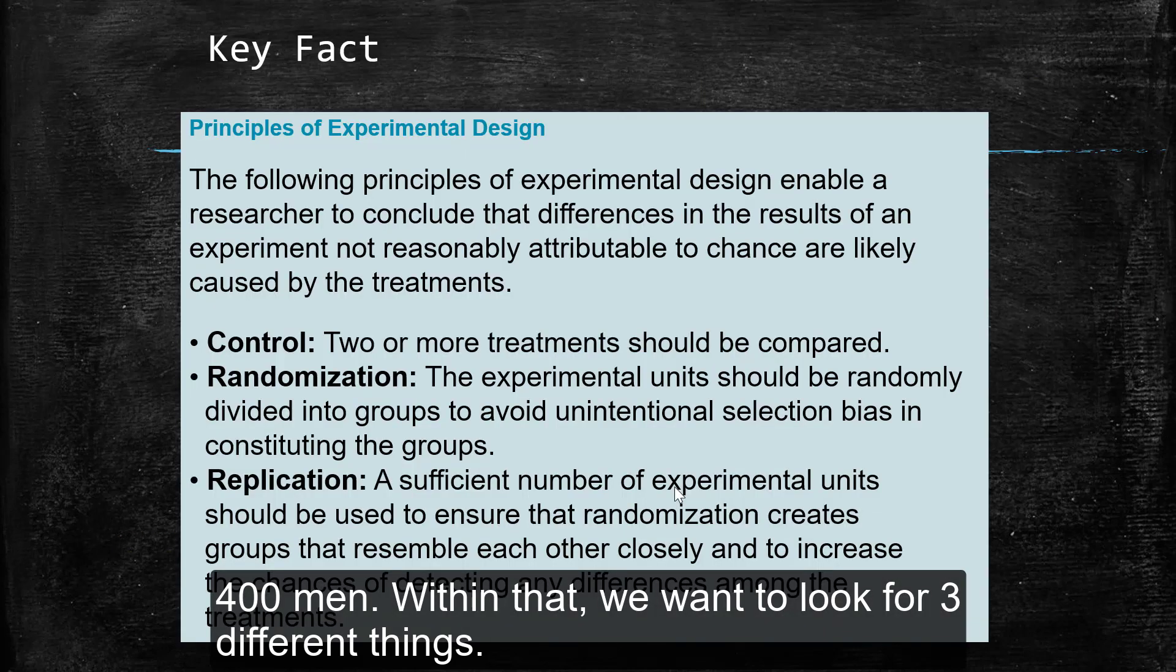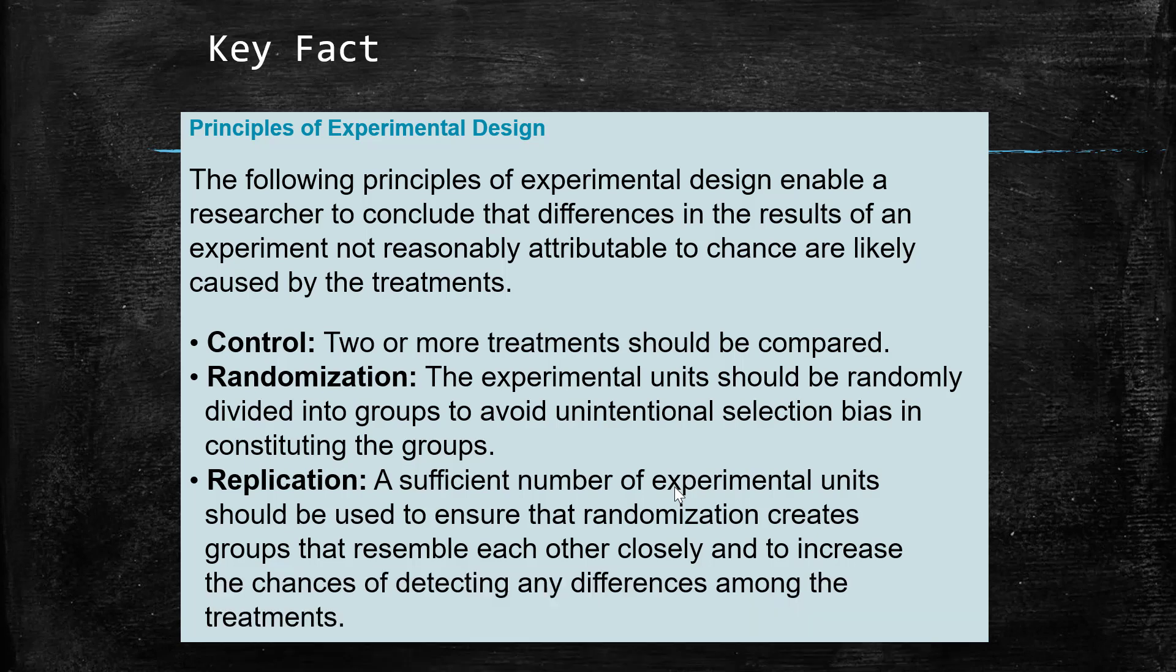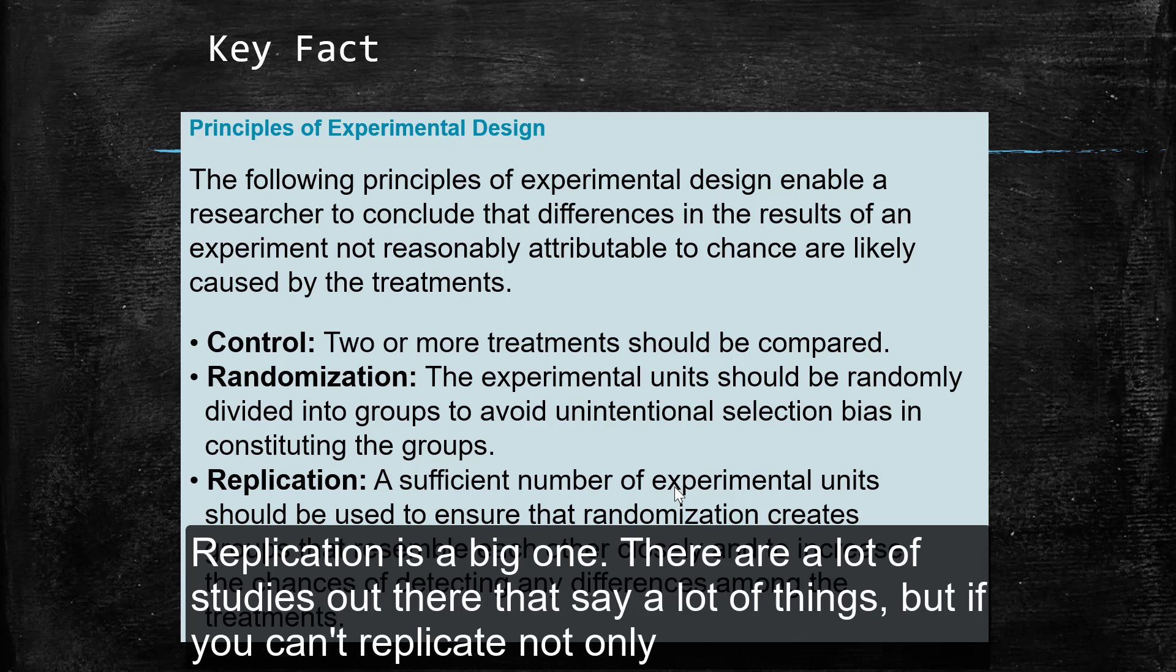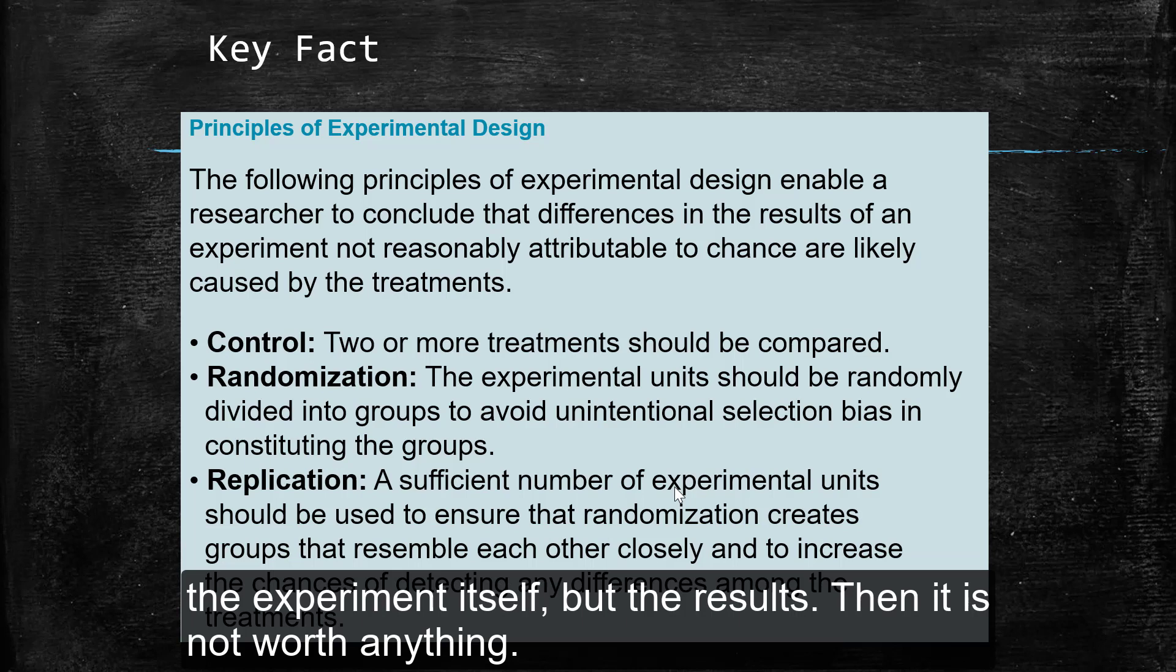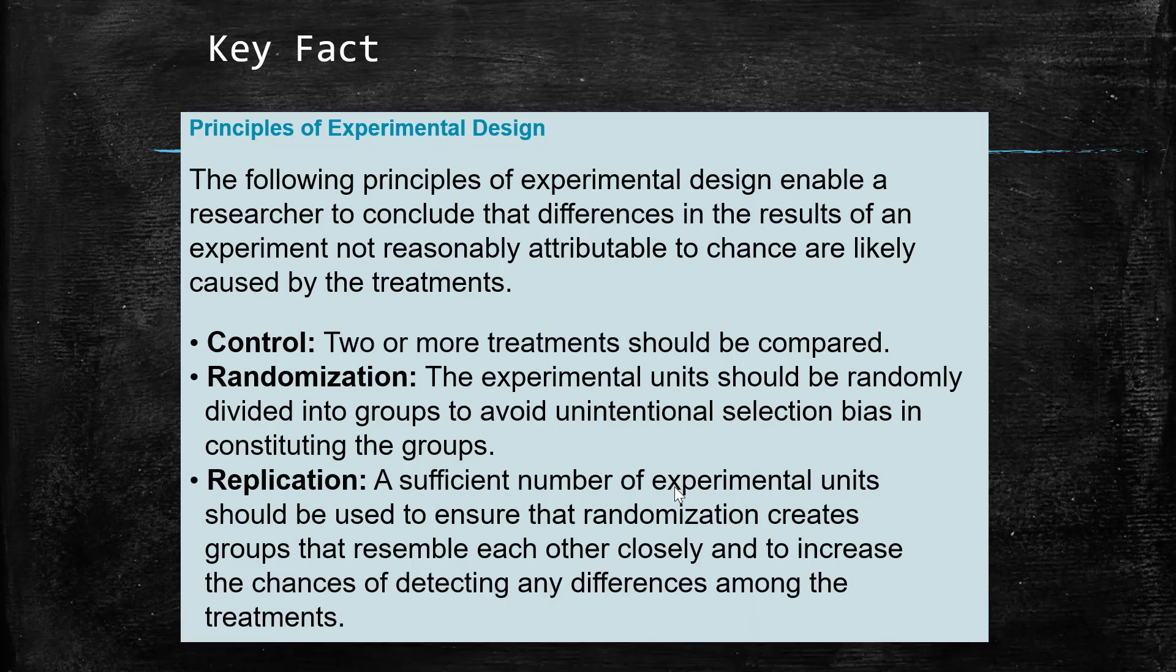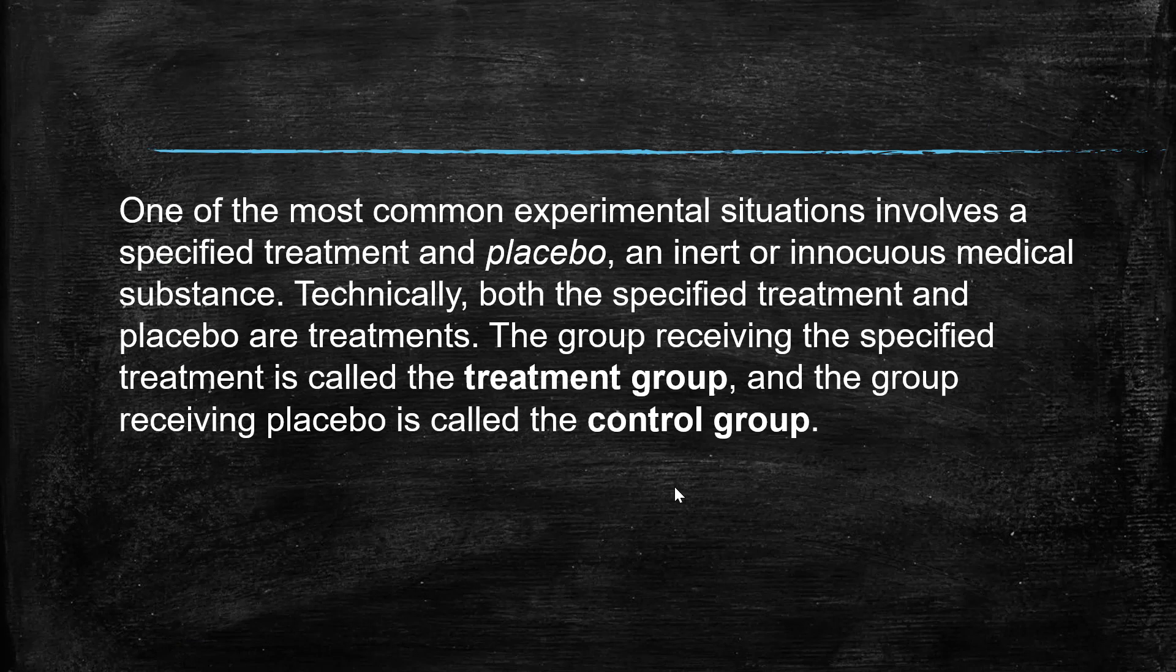Within that, we want to look at three different things. We want to control, so two or more treatments should be compared. We should be able to randomize, so the experimental units or the subjects should be randomly divided into groups. And that avoids unintentional selection bias. And we should be able to replicate. And that's a big one. There's a lot of studies out there that say a lot of things, but if you can't replicate not only the experiment itself but the results, then it's really not worth anything. So replication is where a sufficient number of experimental units or subjects should be used to ensure that it does create groups that resemble each other closely enough to increase the chances of detecting differences.